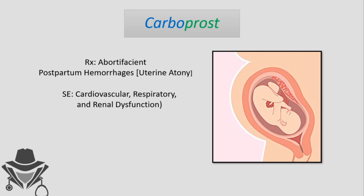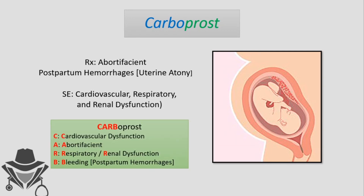Because prostaglandin F2 alpha is bad, if carboprost enters the circulation it can cause cardiovascular, respiratory, and renal dysfunction — vasoconstriction, bronchoconstriction, and decreased renal blood flow. Mnemonic using CARB: C for cardiovascular dysfunction, A for abortifacient, R for respiratory and renal dysfunction, B for bleeding or postpartum hemorrhage.